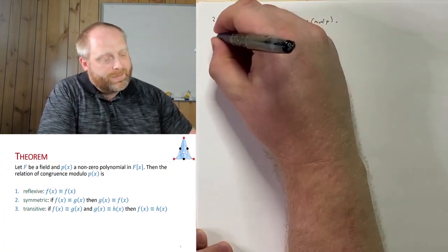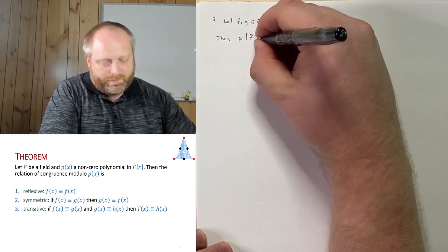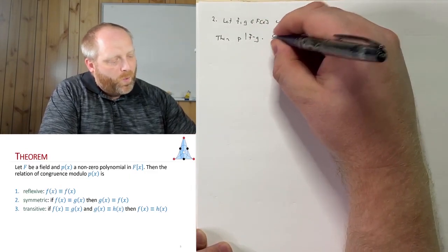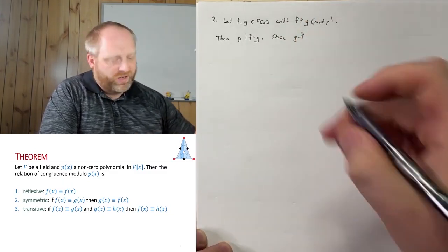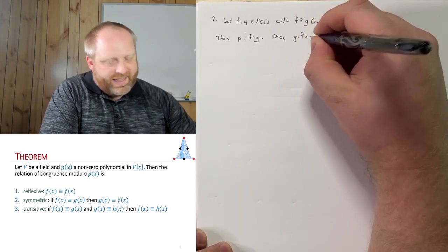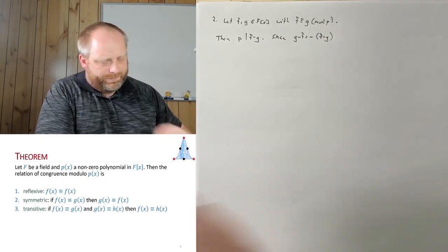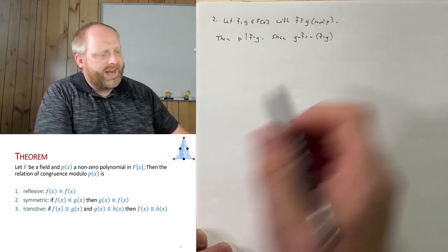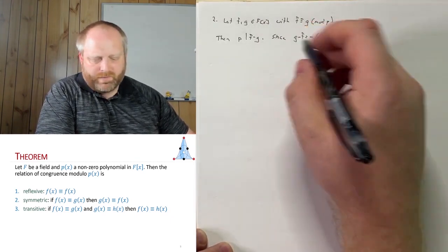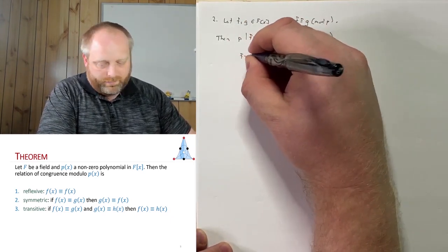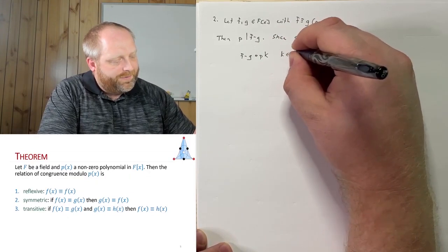But this is where we're starting. So if this is true, then what has to be true? Then p has to divide the difference between f and g. Now, remember from a while back, we can rewrite this. So since g minus f is where our end goal is, we can write this as I can take the negative of f minus g.